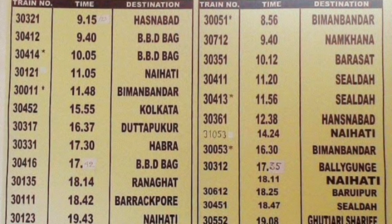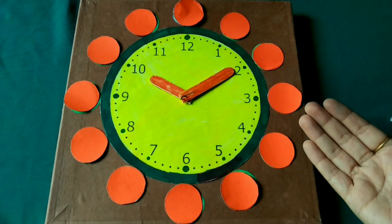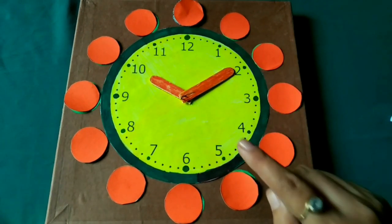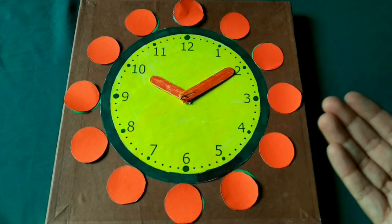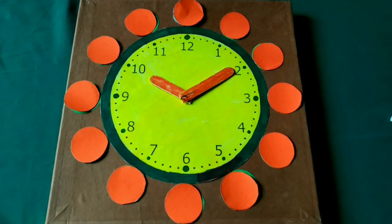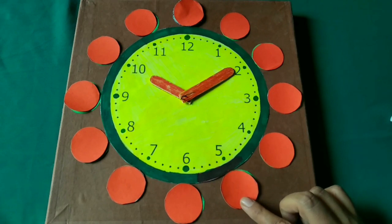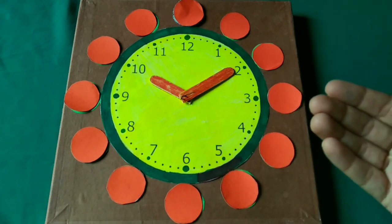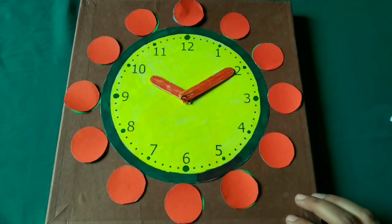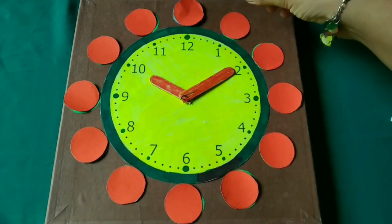Now, today we are going to learn how to change the 12 hour notation into 24 hours. Look here kids, in 24 hour notation, the time from 12 midnight to 12 noon is the same as in 12 hour notation. But to show the time after 12 noon, we add 12.